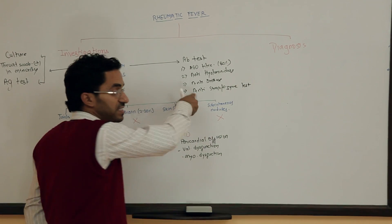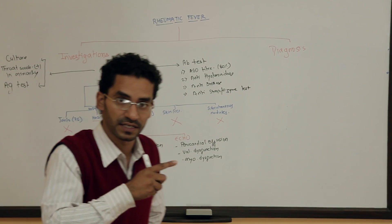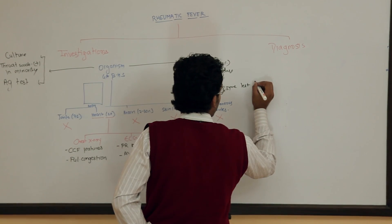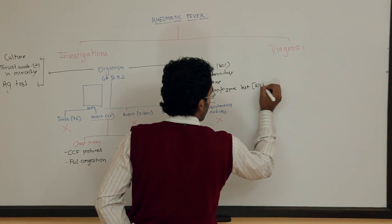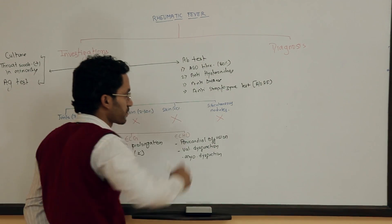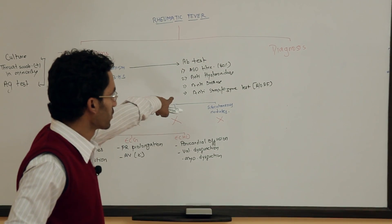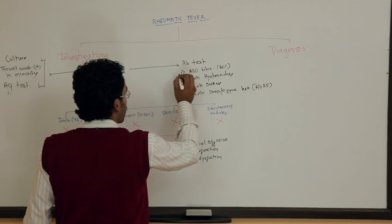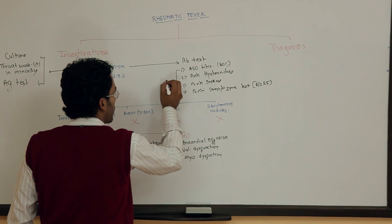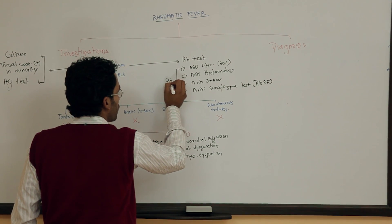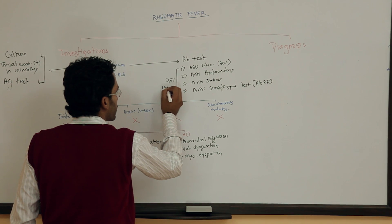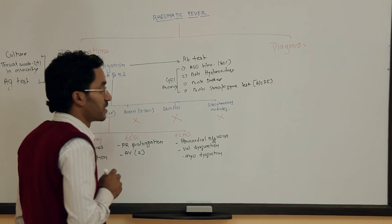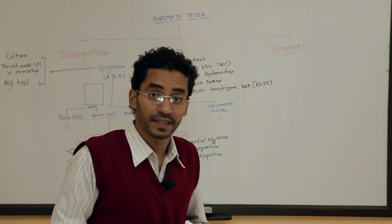The antistreptozyme test is used to rule out rheumatic fever. These four tests together give an accuracy of 90 to 95 percent.